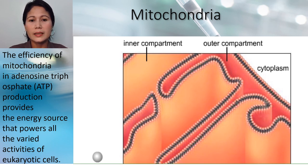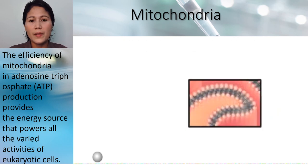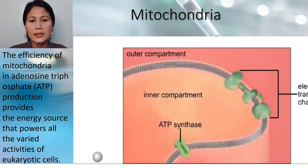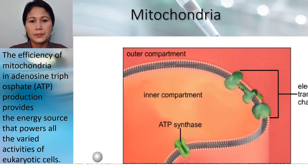The machinery that carries the most efficient energy-releasing reactions is embedded in the inner mitochondrial membrane. Electron transfer chains and ATP synthases embedded in the mitochondrial membrane are used to produce ATP. Oxygen keeps the machinery running by binding and removing the spent electrons.